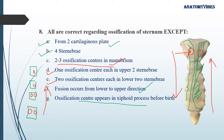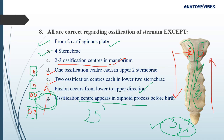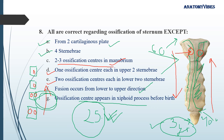The ossification center of the xiphoid process appears at three years of age — it does not appear before birth. All parts of the sternum fuse at approximately 25 years of age, except: the manubriosternal joint, which may not fuse even at 60 years of age, and the xiphoid process, which fuses with the body at 40 years of age. The incorrect statement is that the xiphoid ossification center appears at three years of age — wait, this is actually correct. The answer here is whichever option contradicts these facts.